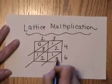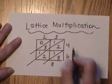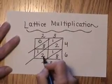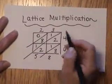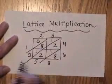Then, to get your total, you add the numbers going on the diagonal. 8, 2 plus 1 plus 2 is 5, 1 plus 8 plus 1 is 10, carry the 1.